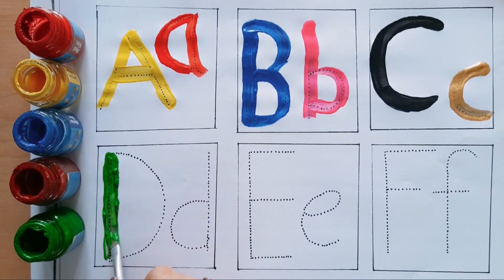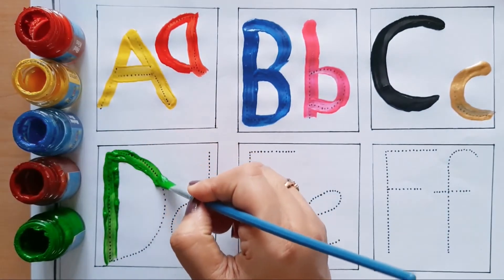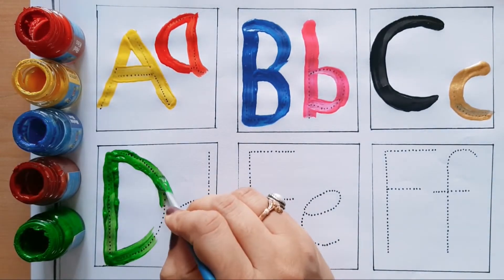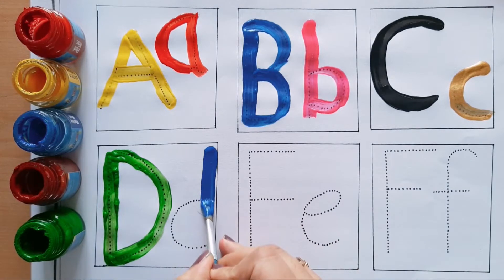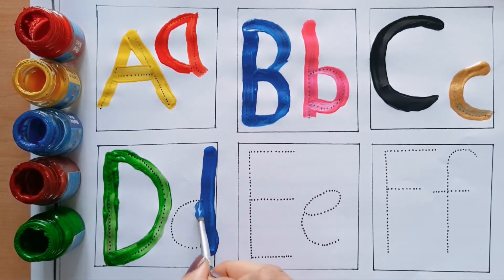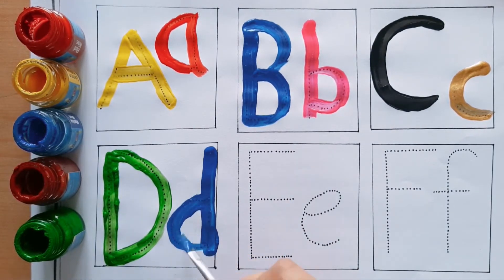Capital D, green color. D for Deer - Deer means Hiran. Small d, blue color. D for Doctor - Doctor means Chikitsak.